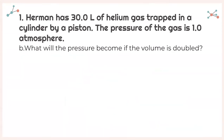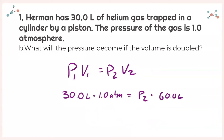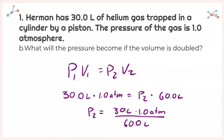For part B, similar setup: what will the pressure become if the volume is doubled? Again writing down P1 times V1 equals P2 times V2 and plugging in what I was given. The only thing changing is V2 — now it's doubled, so instead of 30 liters, it's 60 liters. Solving for P2, I get 0.5 atmospheres.